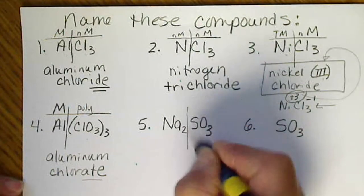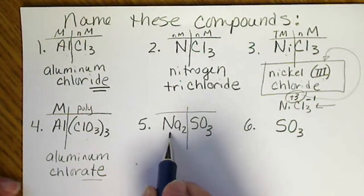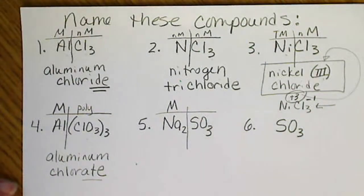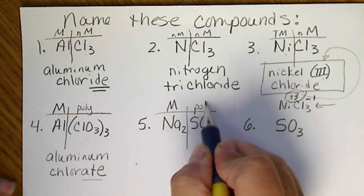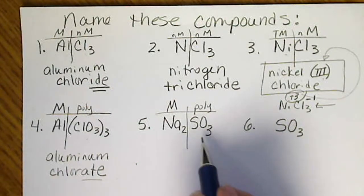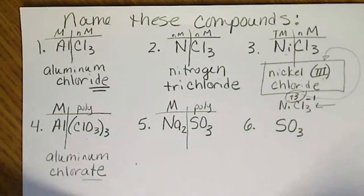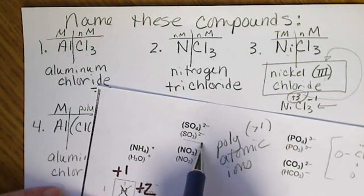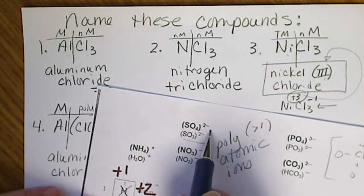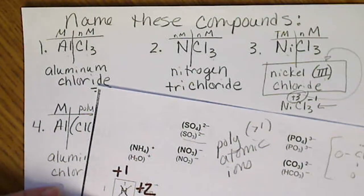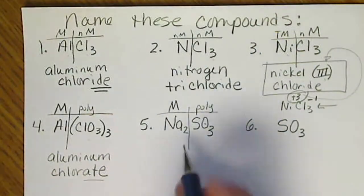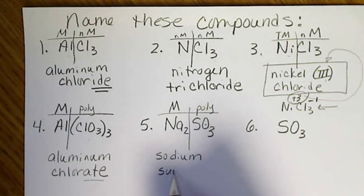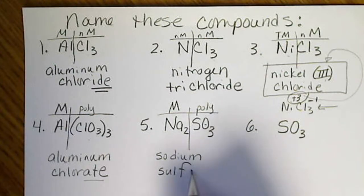Now if we look at this next one, that's just a simple metal, meaning its charge never changes, and this is another poly. If we look on the periodic table, SO3, this is not the one in bold. This is sulfite. This is sulfate. This is sulfite. So sodium does not need a Roman numeral because it's a simple metal. This is sodium sulfite.